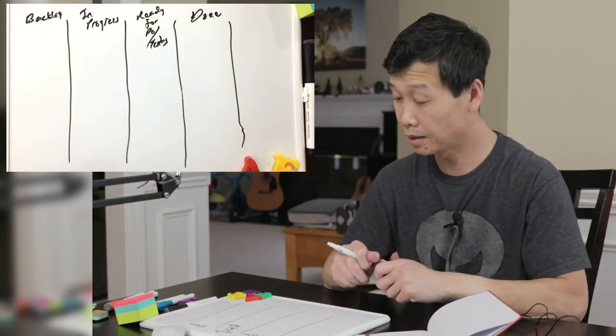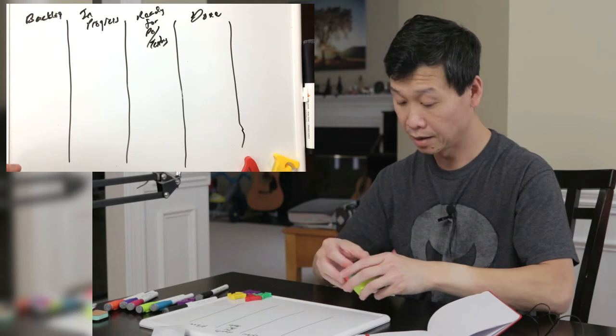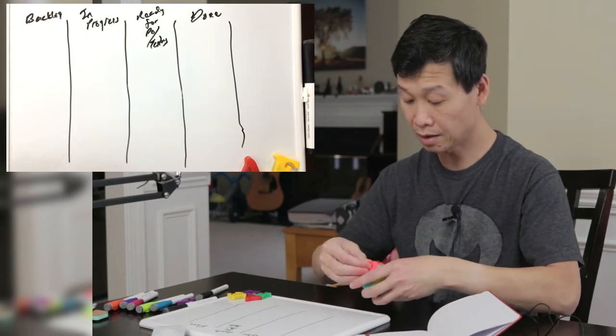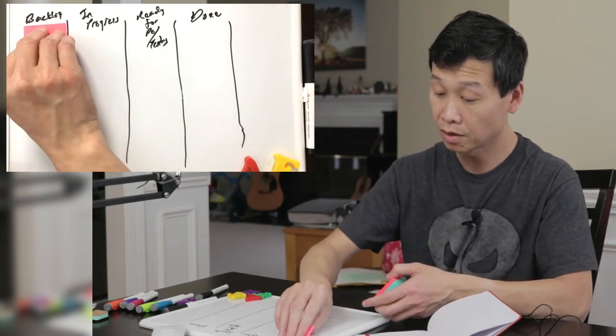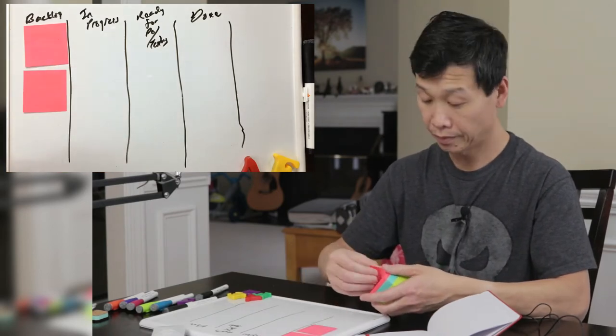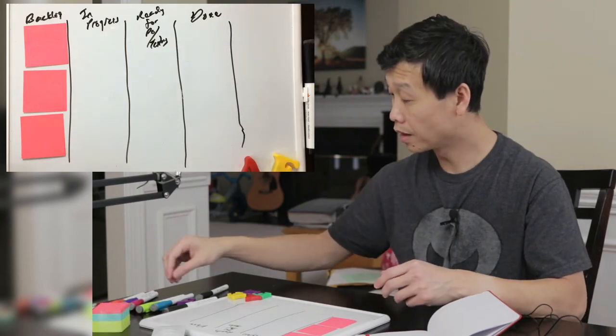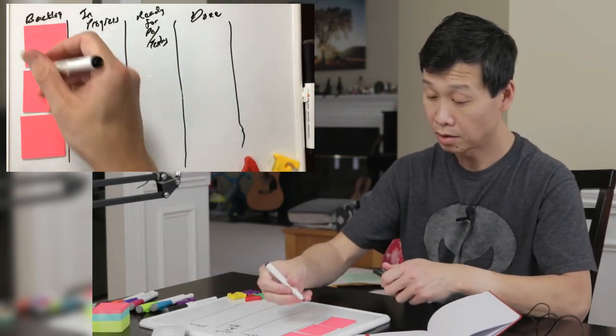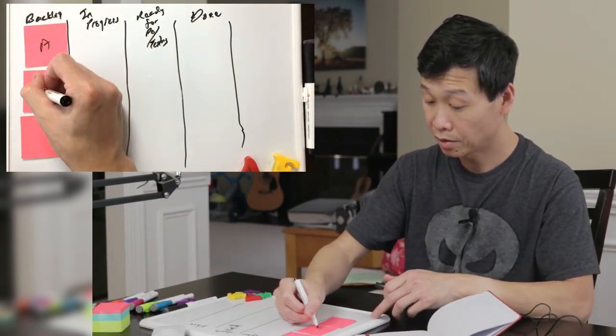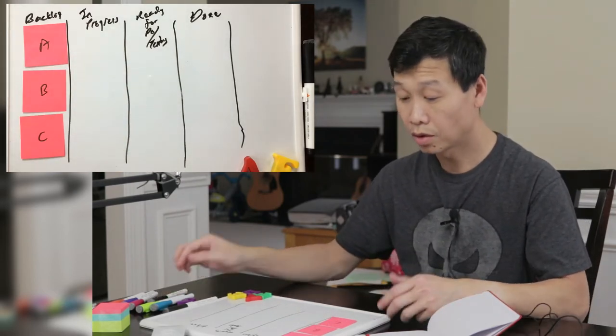We're going to use some stickies here to help us do that. Let's say we're going to start the sprint with one, two, and three. Let's just use three for right now. I'm going to denote that as story A, story B, and story C.